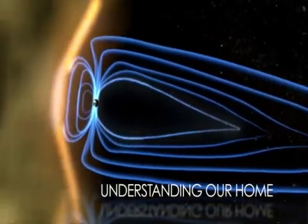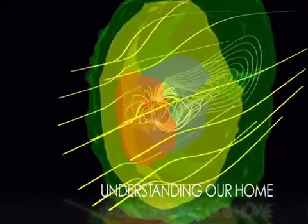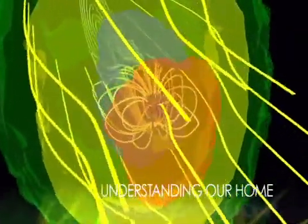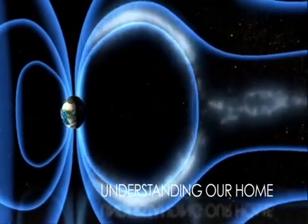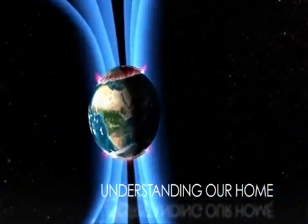NASA also studies how the Sun's variability affects our home. Solar storms and solar winds have a strong effect on the Earth and its magnetic field. By studying the Sun's natural ebb and flow, we can learn more about its role in creating phenomena such as the Northern Lights.